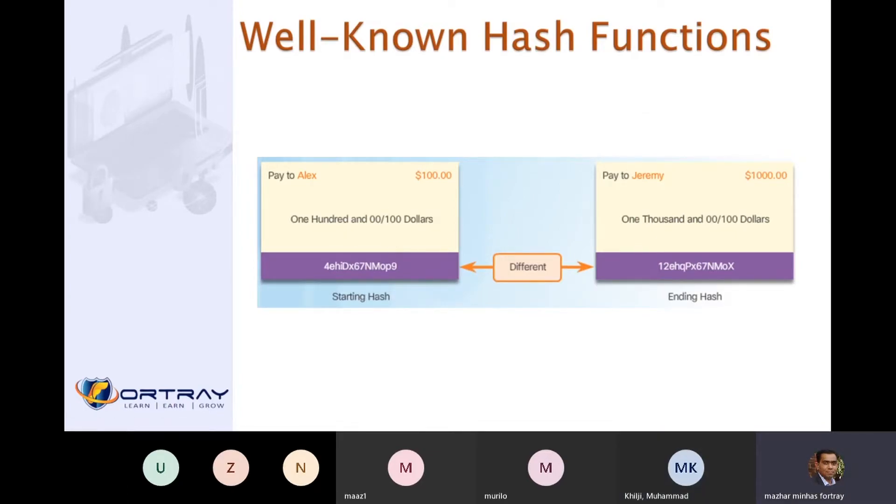Let's say two people, Alex and Jeremy, are trying to do a transaction over the internet. Alex wants to send one hundred dollars, and this is the string attached when he tries to send the message. But during the middle of that, somebody intercepts it and adds one extra zero. As a result, when he tries to calculate the ending hash, this hash is different than the calculated hash. It means the message has been tampered with, the message has been changed in the transit path.